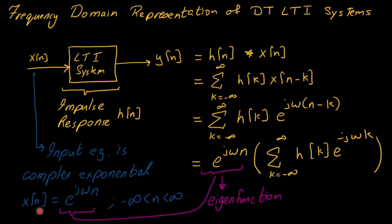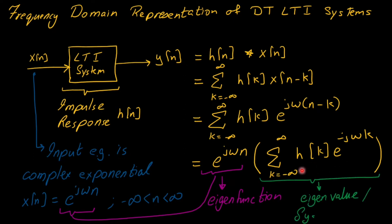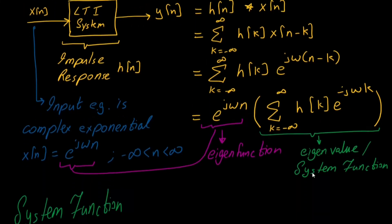The input x of n equal to e to the power j omega n reappears at the output y of n. This is called the eigenfunction — the complex exponential is a very significant signal that retains itself at the output of an LTI system. The remaining factor is called the eigenvalue or system function.